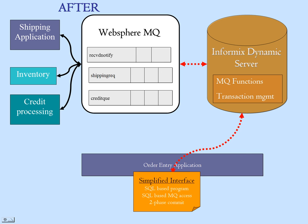IDS has features to treat some of the queues in WebSphere MQ as tables, so interaction can be directly through functions or through this table interface from which you can select or insert into. We also have two-phase commit which manages the transaction for all the interactions between IDS and MQ. This before and after scenario should give you an idea about the simplified approach to IDS and WebSphere MQ interaction.